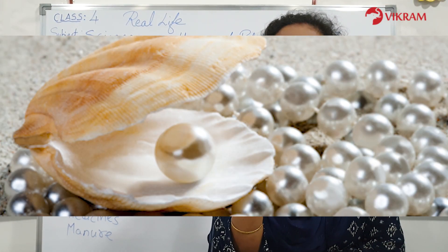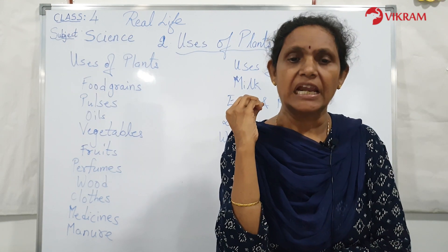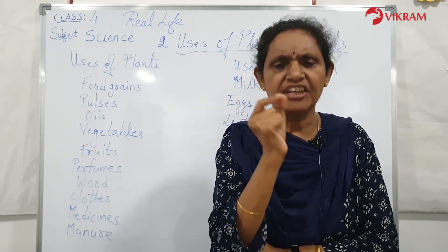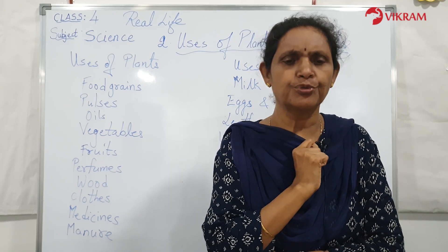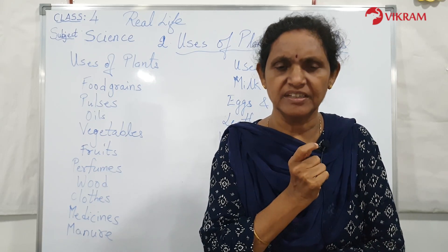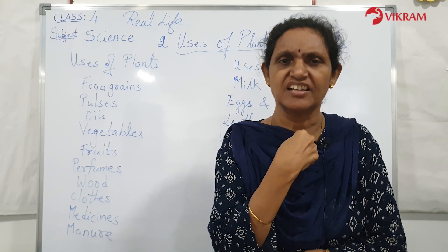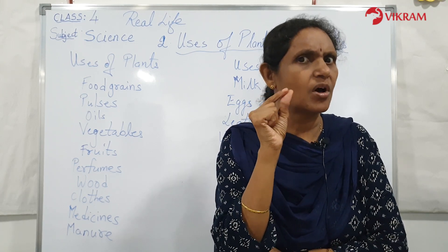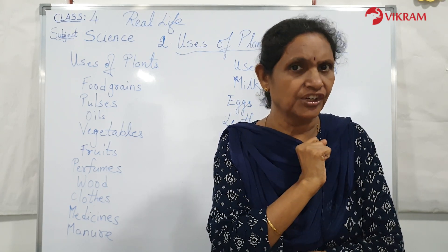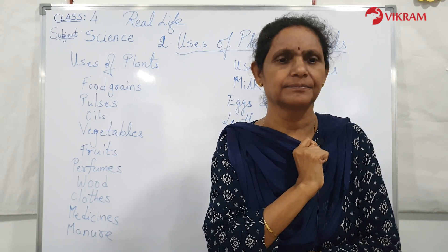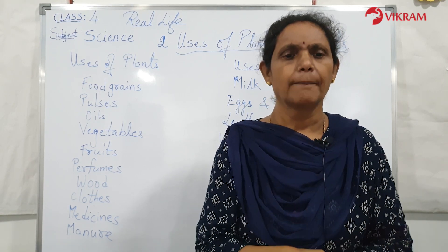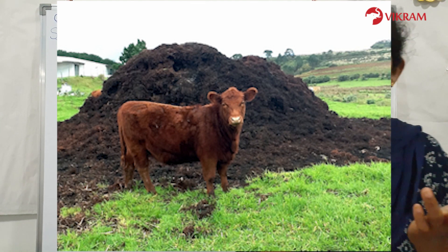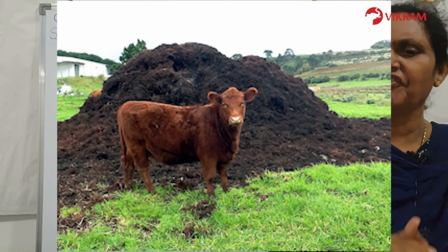Pearls — small white, pink, and many other colored pearls — are obtained from oysters living in shallow seas. Pearls are very valuable and are used for making ornaments like chains, necklaces, and earrings.